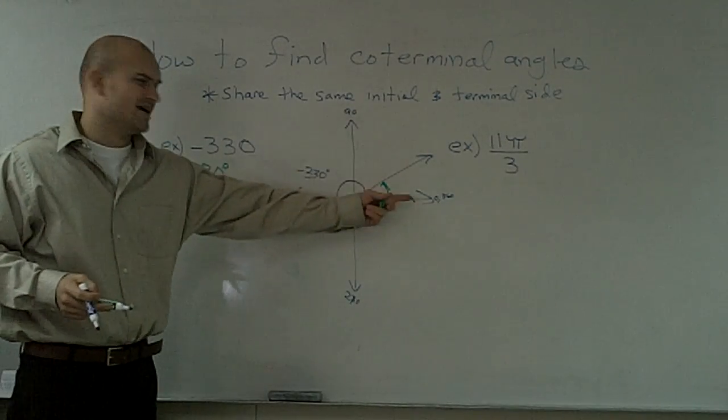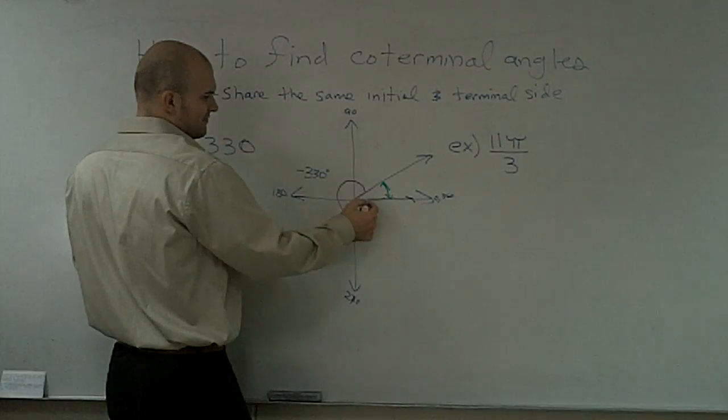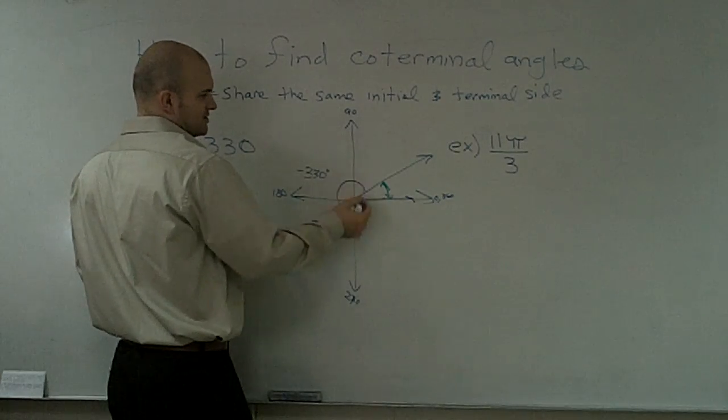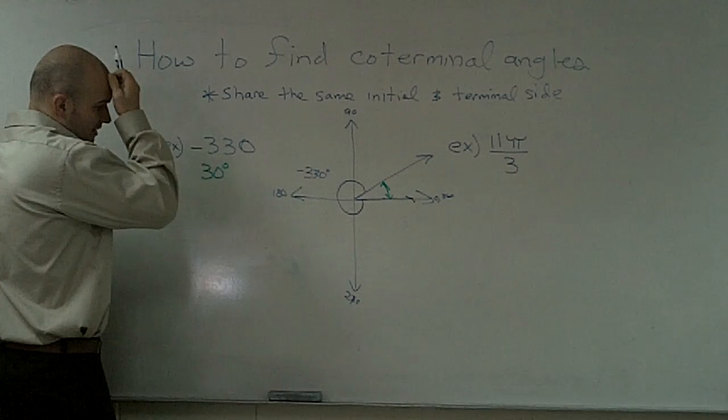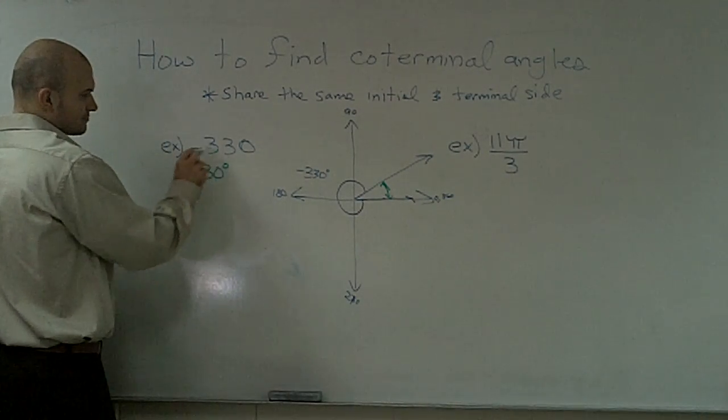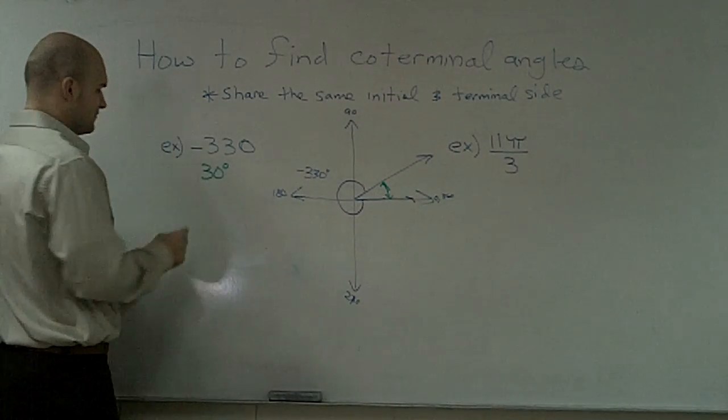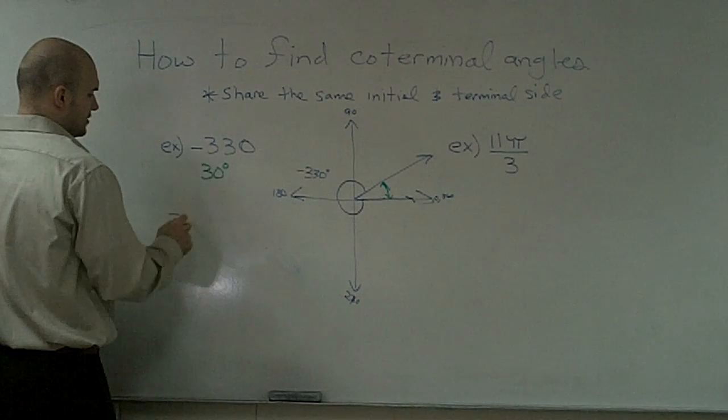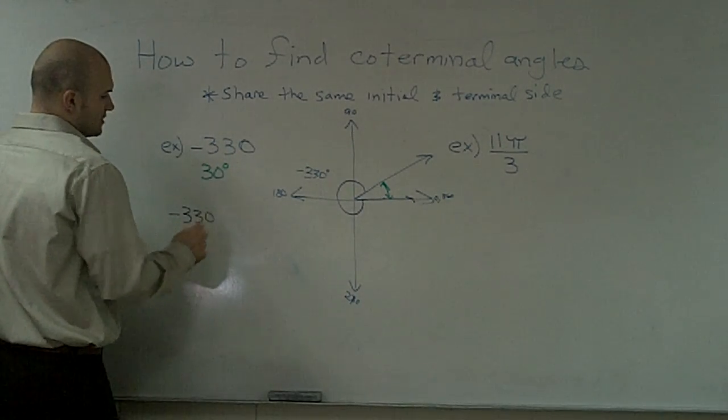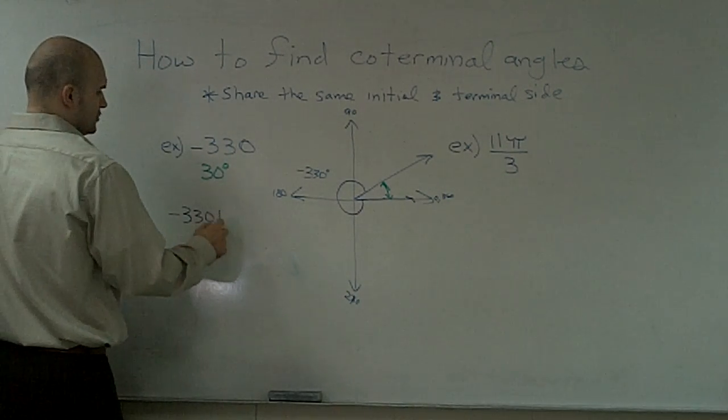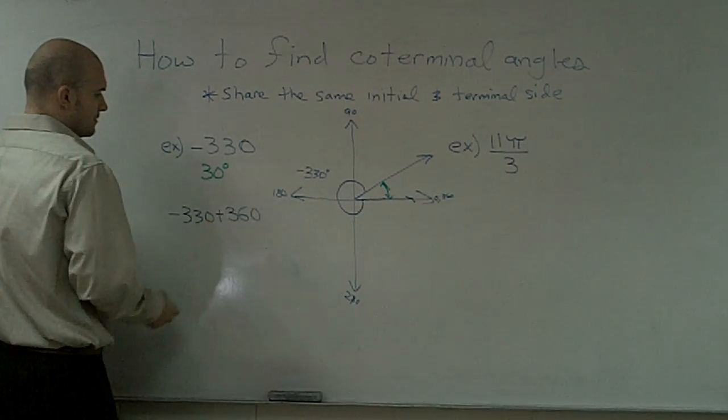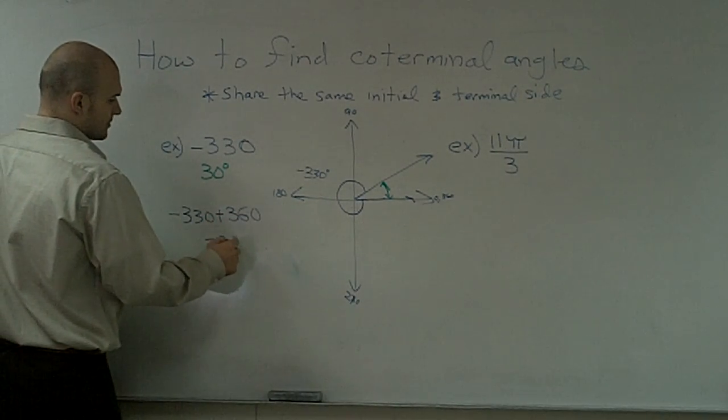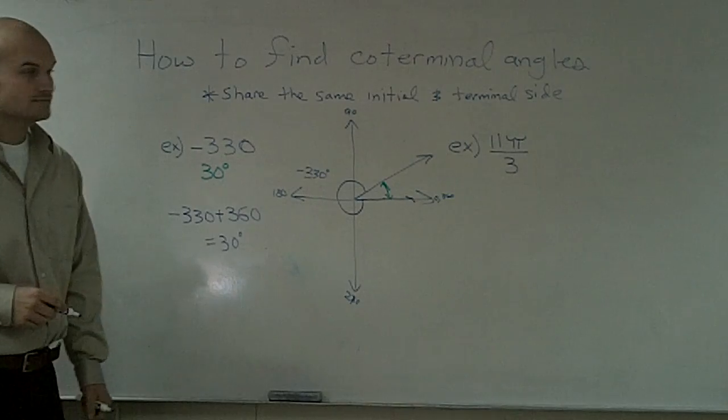I can easily determine that just graphically. Our algebraic way is when you have a negative angle, to find the coterminal angle, you add 360 degrees. And what you end up getting is 30 degrees.